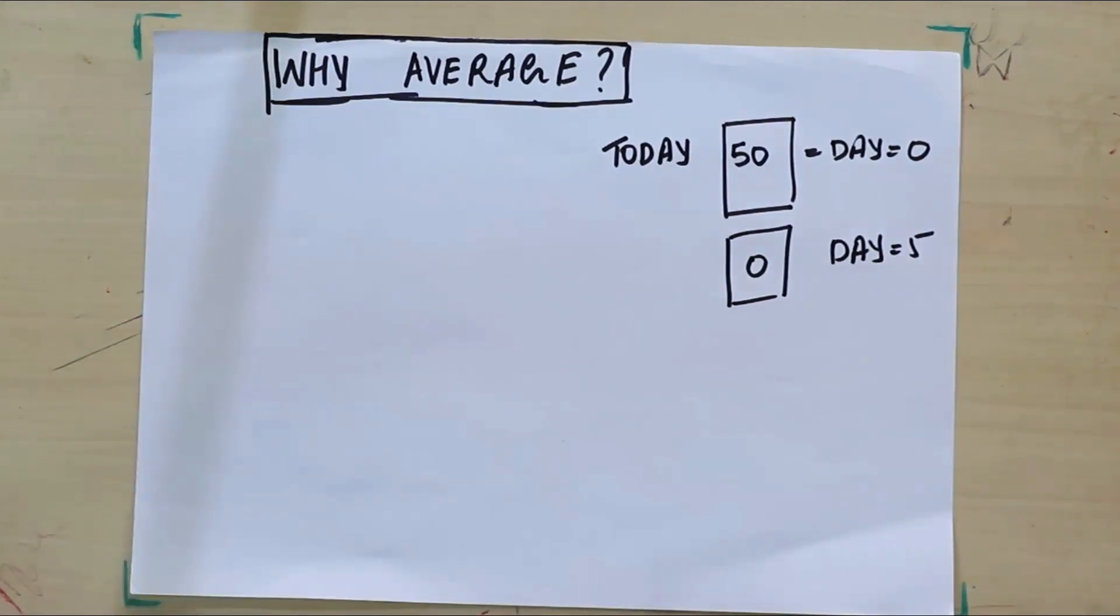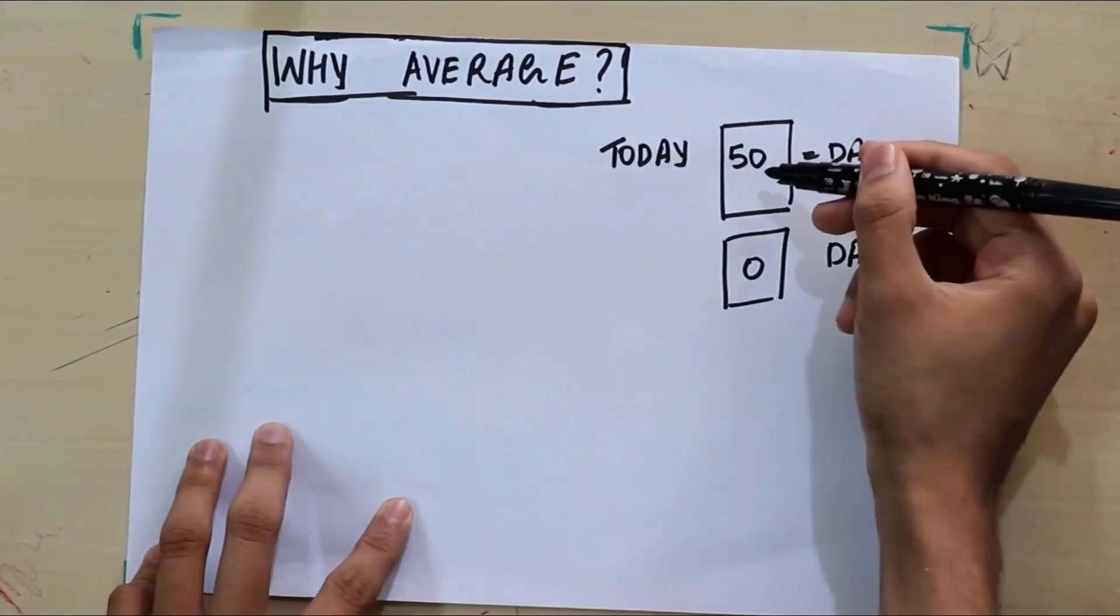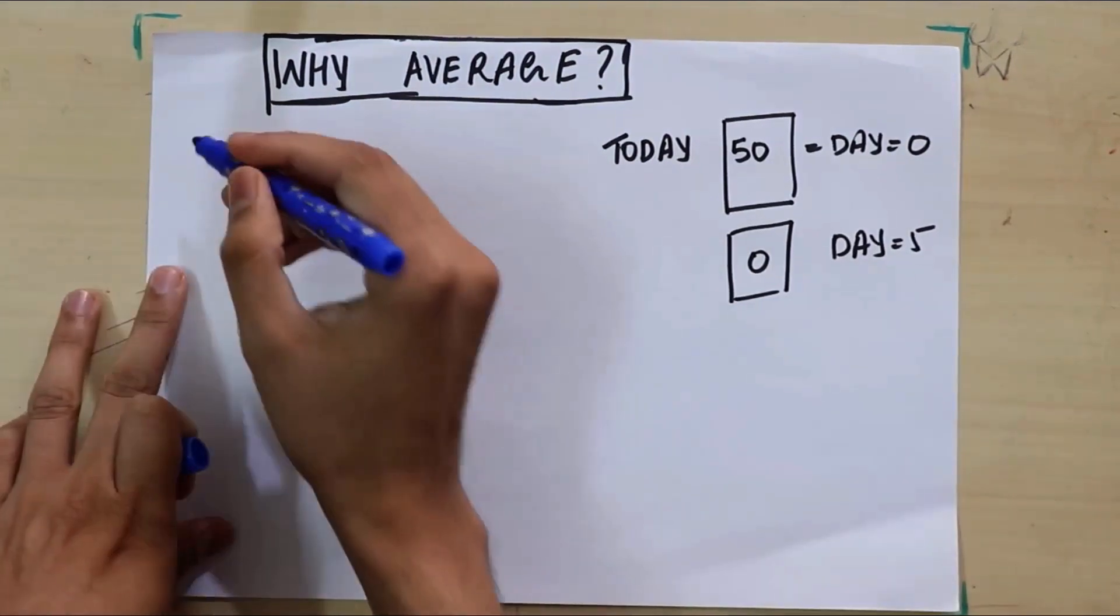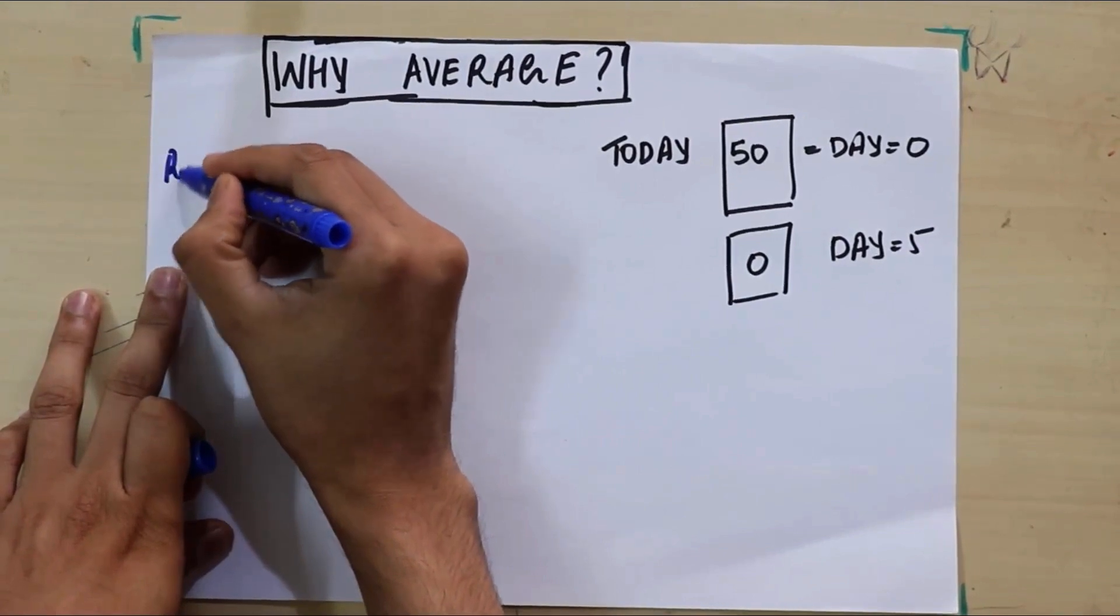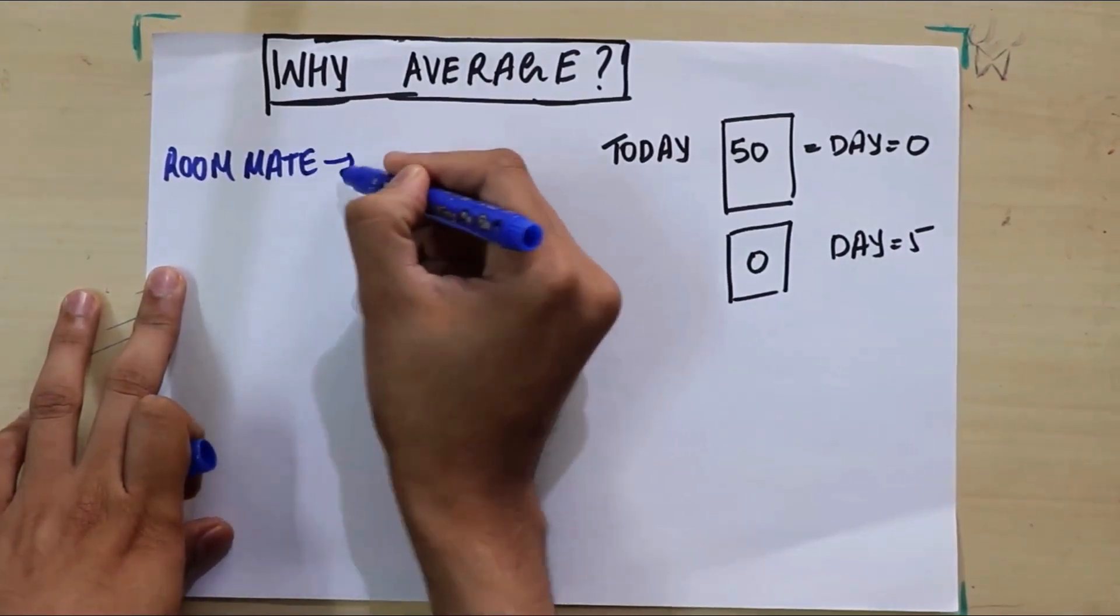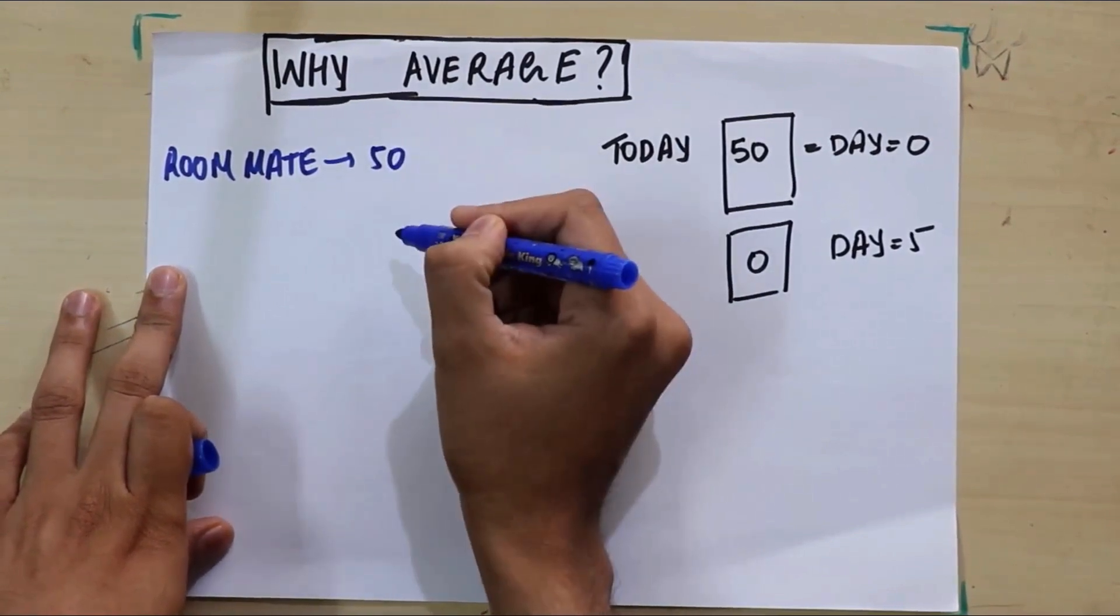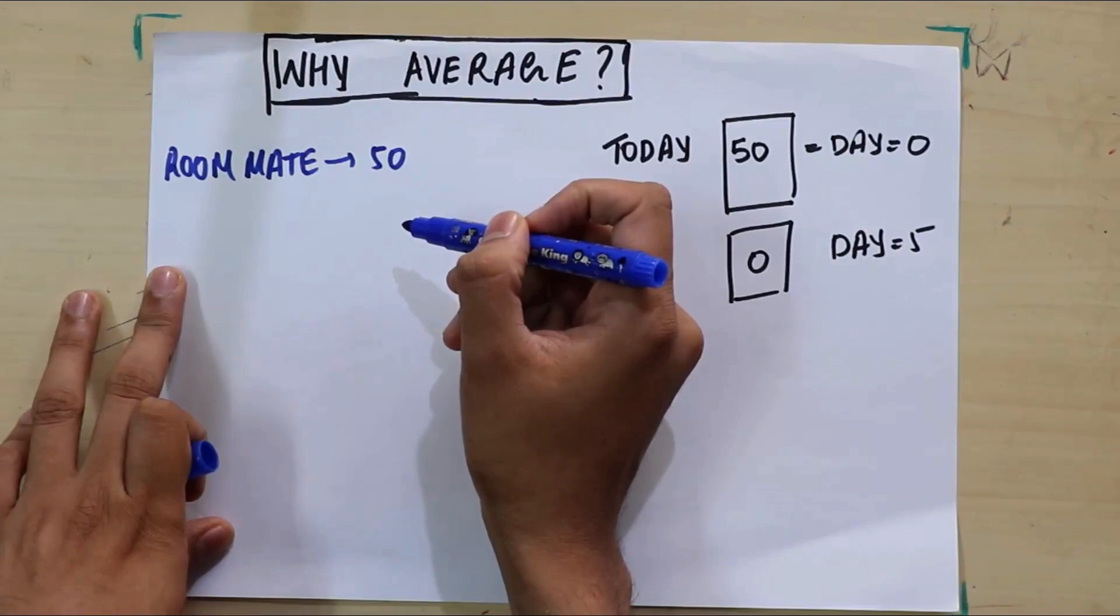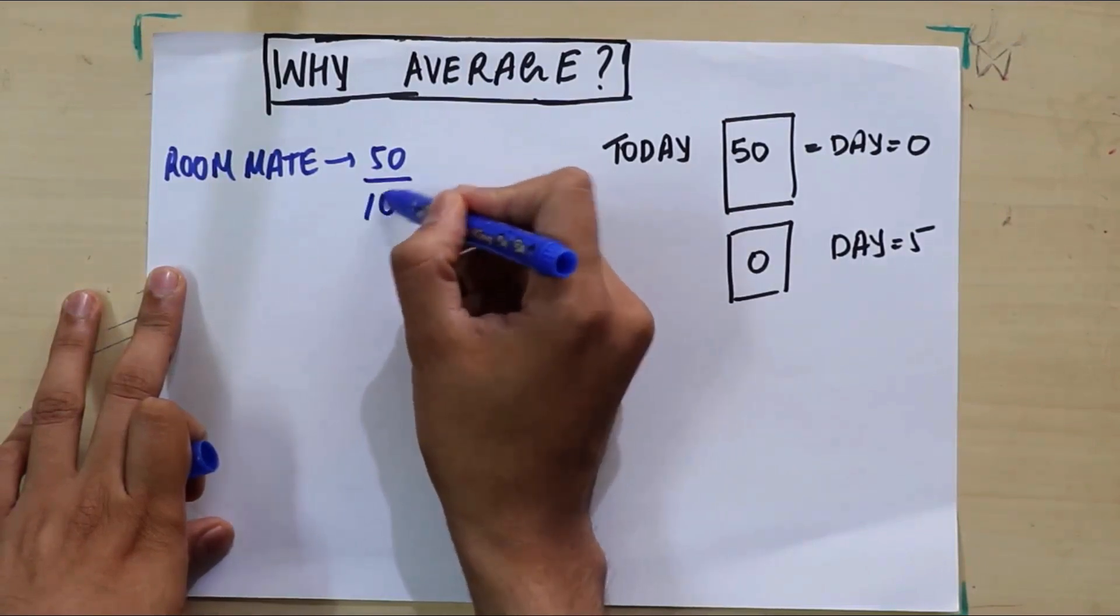So what happened? Well, I would say in five days my roommate ate 50 candies. Let me write that down. So my roommate eats 50 candies in five days. So what is the rate at which he's eating candies? Well, if I divide them,